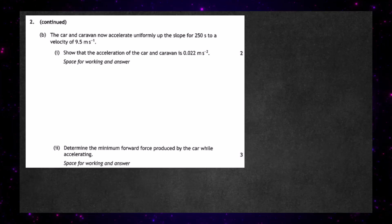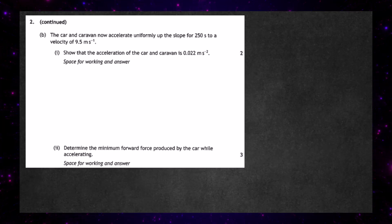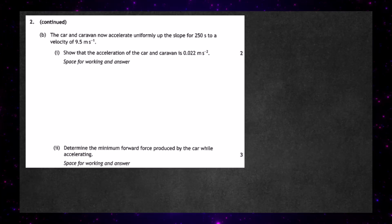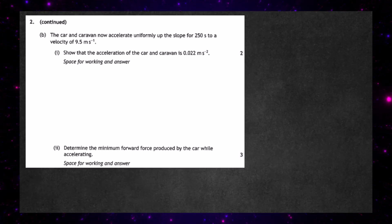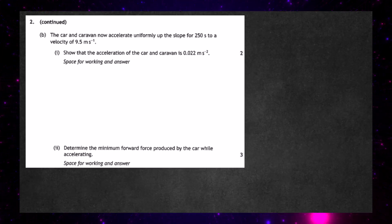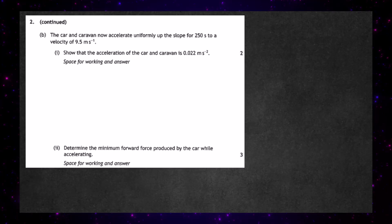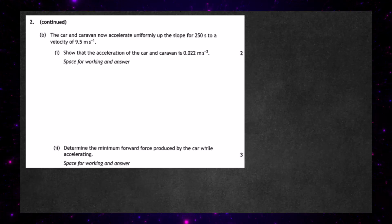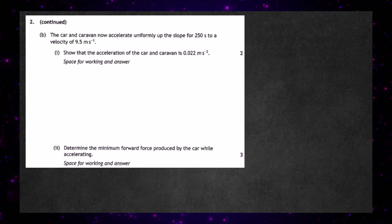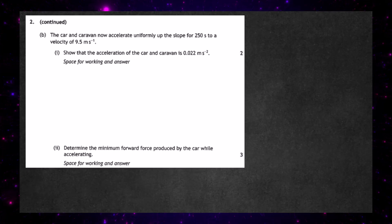Part B: the car and caravan now accelerate uniformly up the slope for 250 seconds to a velocity of 9.5 metres per second. For two marks, we have to show that the acceleration of the car and caravan is 0.022 metres per second squared.